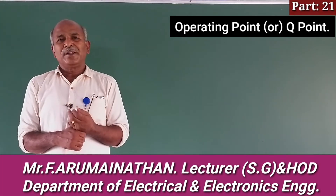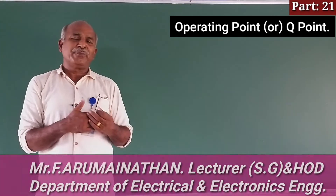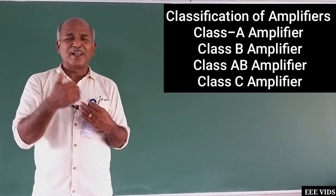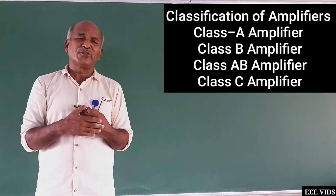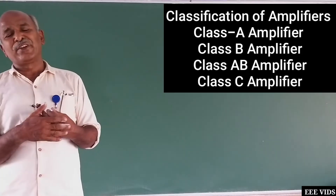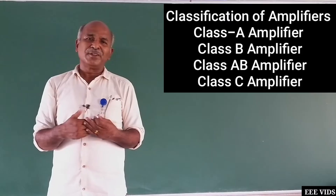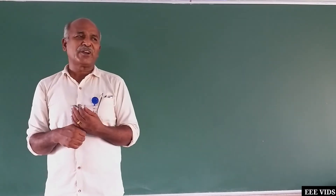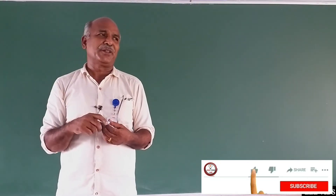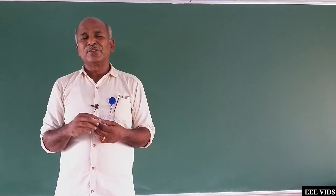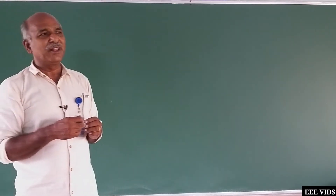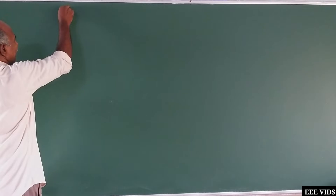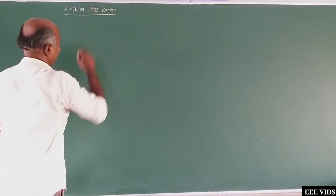Let's get started. Based on the operating point, how does the amplifier circuit class work? There are several types: Class A amplifier, Class B amplifier, Class AB amplifier, and Class C amplifier. There are a lot of amplifier circuits. We can go through them one by one. So, based on the operating point, amplifier classifications.